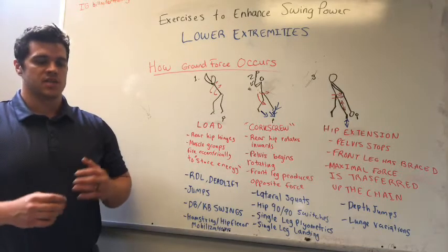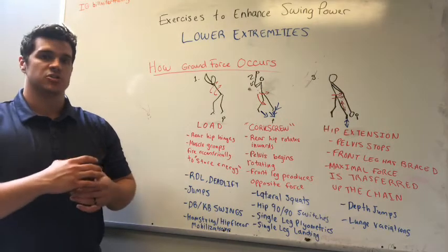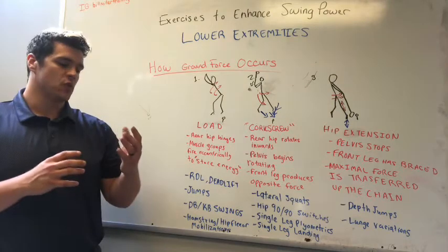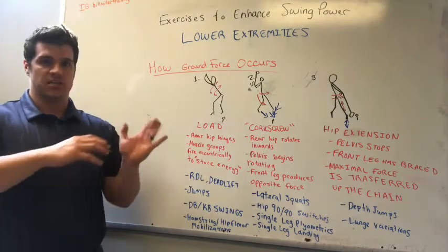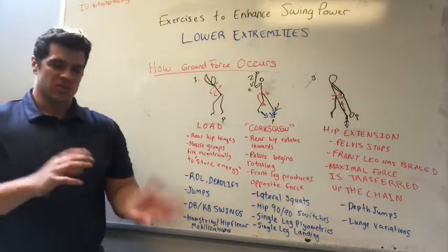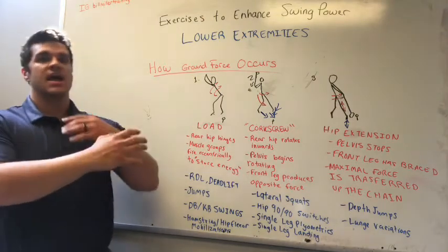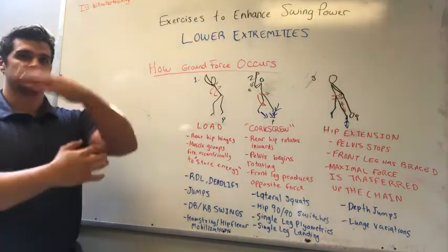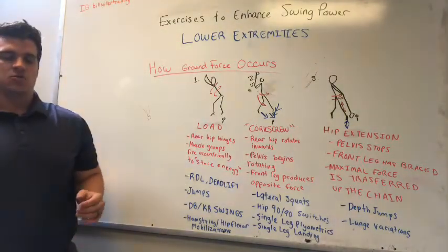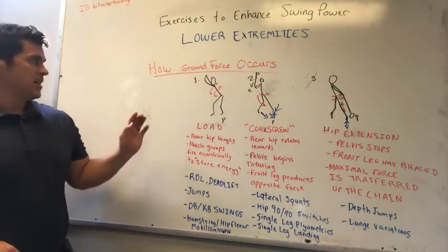The way the kinetic sequence works is that one segment of the chain maximizes its acceleration and overall force production, then decelerates and allows for the next segment of the chain to maximize its acceleration window before it decelerates, and so on. Each segment works pushing the next segment and adding up force until the very end of the kinetic sequence, where the hands produce force through the ball or through the implement being used in the sport.